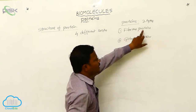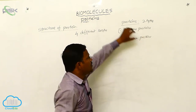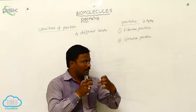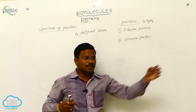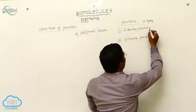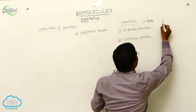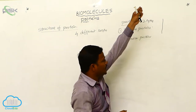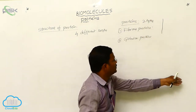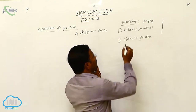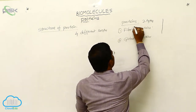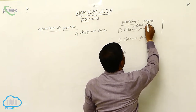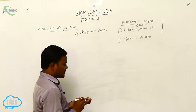Fibrous proteins are those where a long polypeptide chain is present like a straight line. A huge amount of amino acids arranged in a straight line are called fibrous proteins. Fibrous means a thread-type of structure.